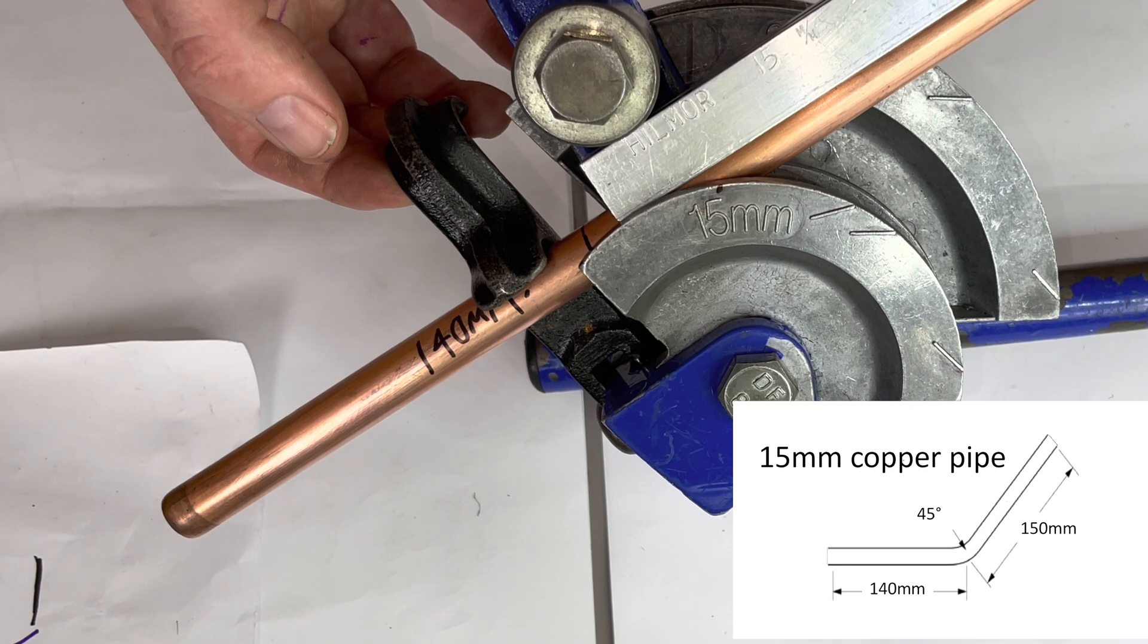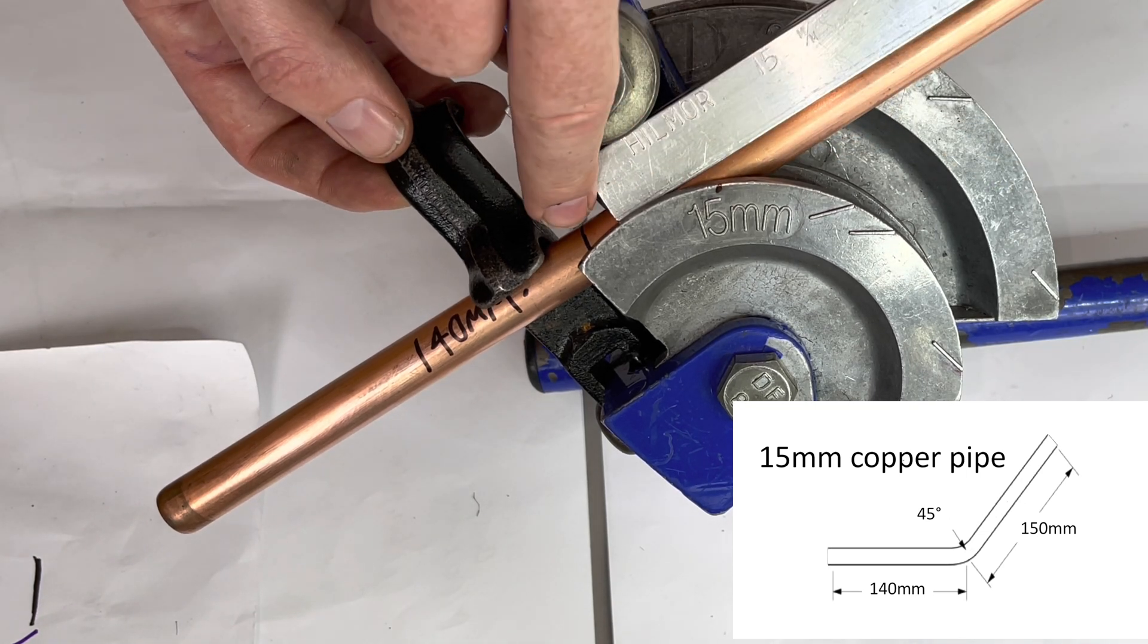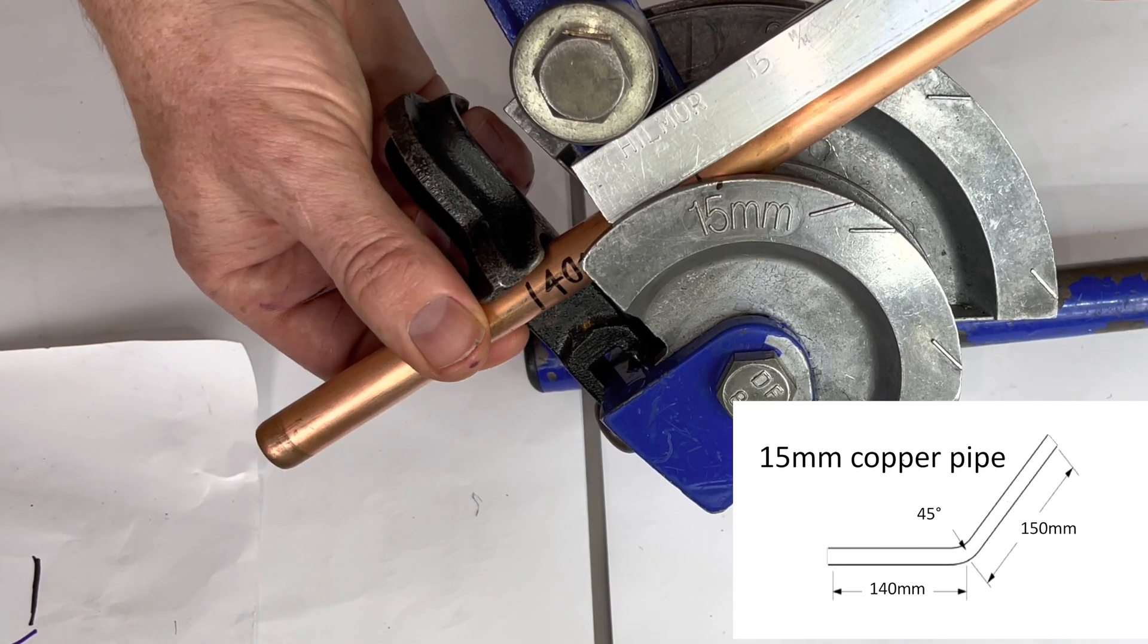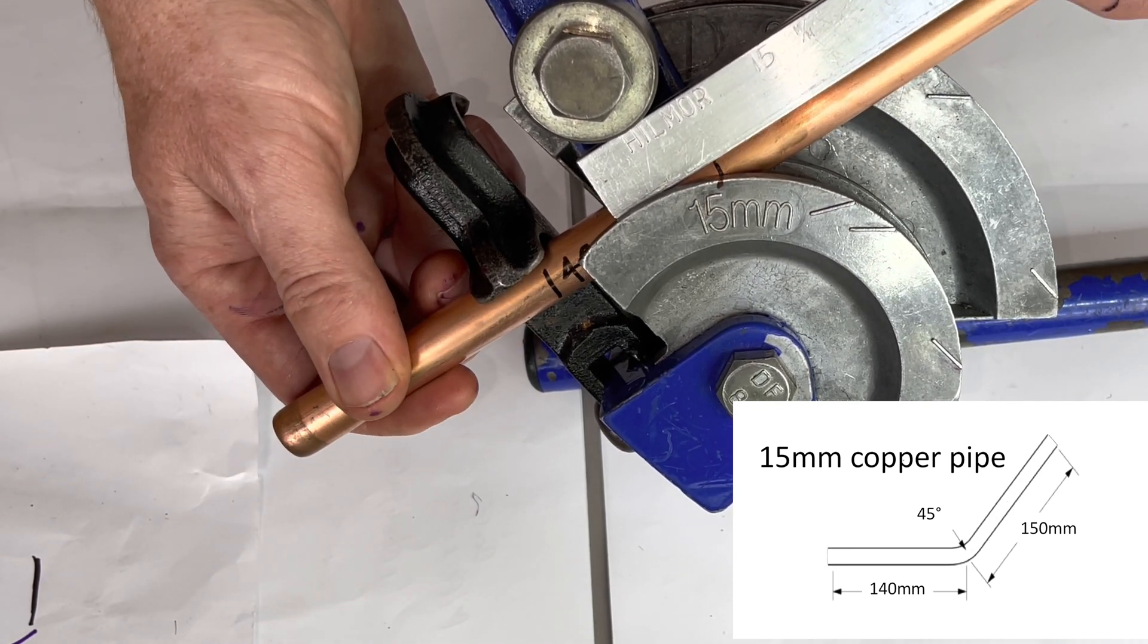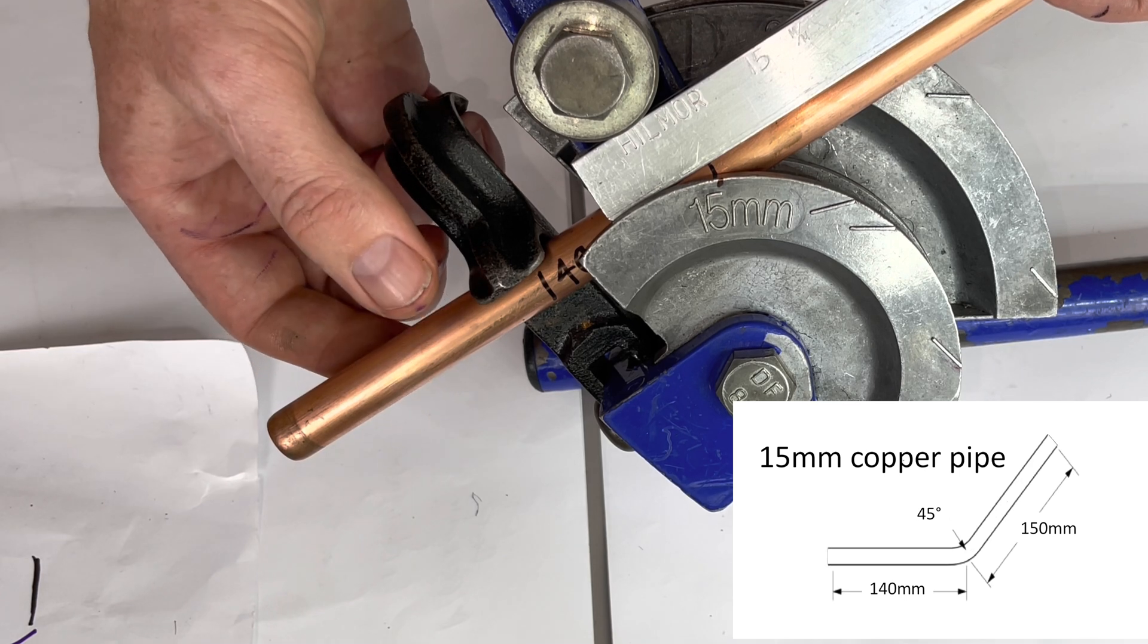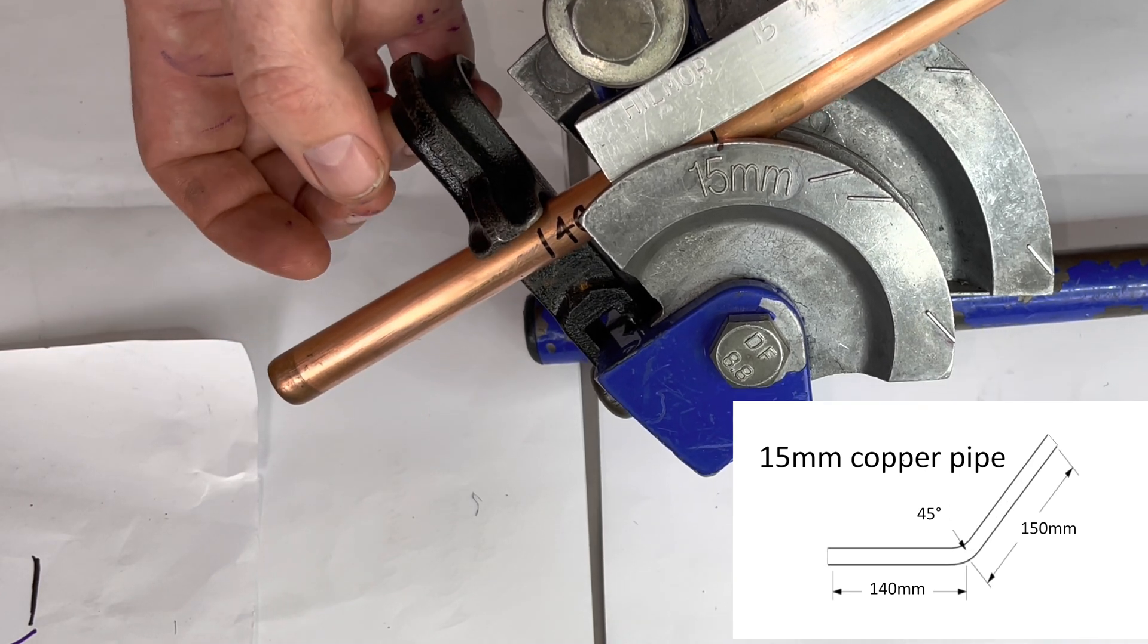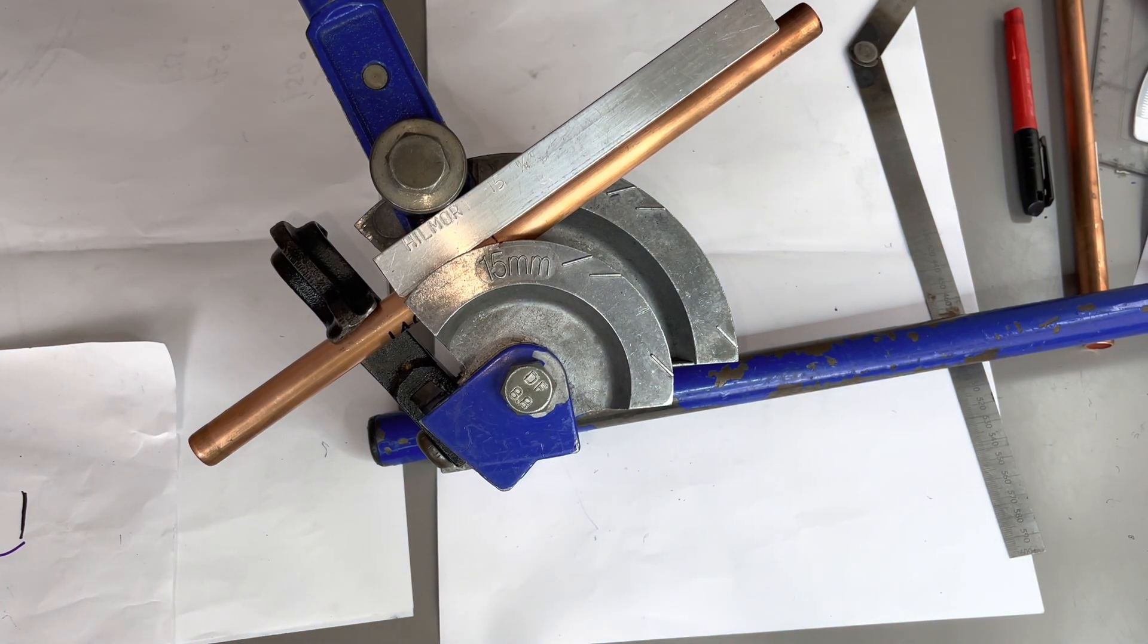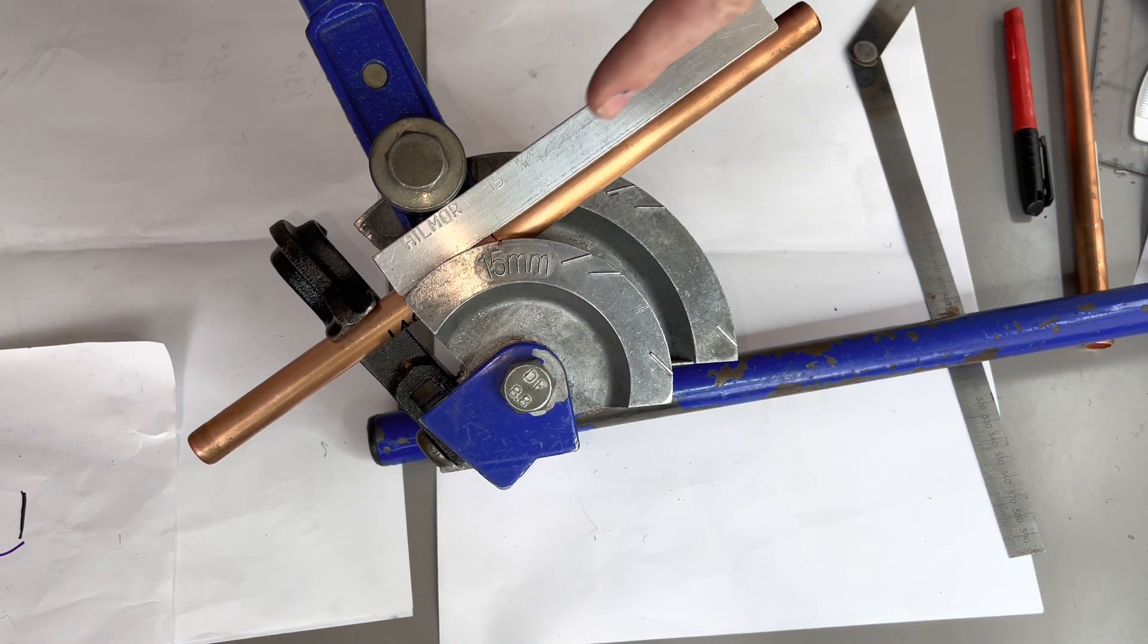Right, so what we now do with our 140 mark and the center of the bend mark, we need to line them both up like this. All right, now let's bend it 45 degrees.